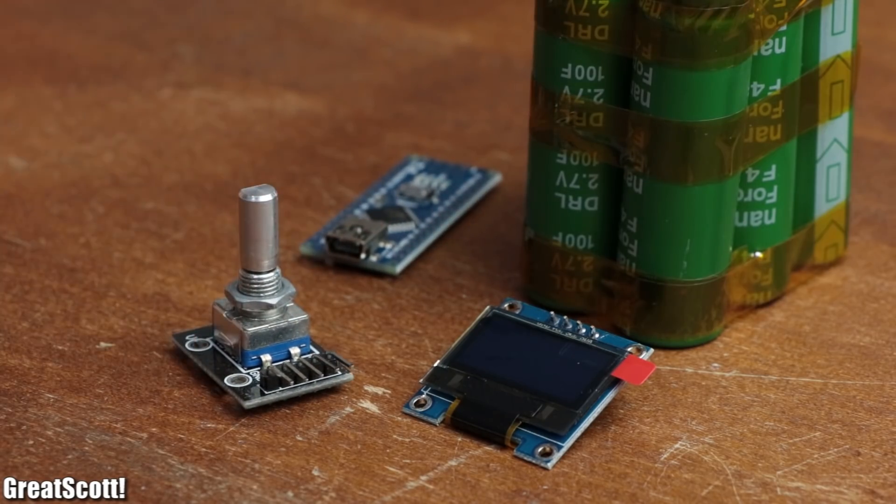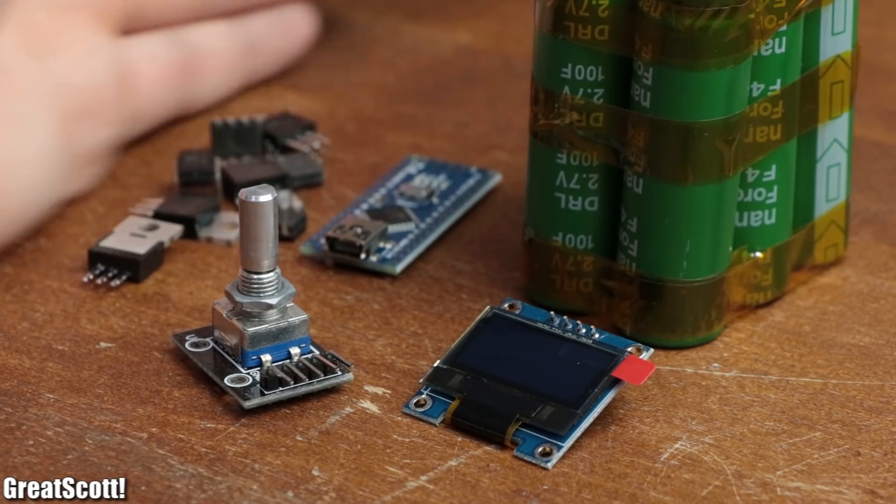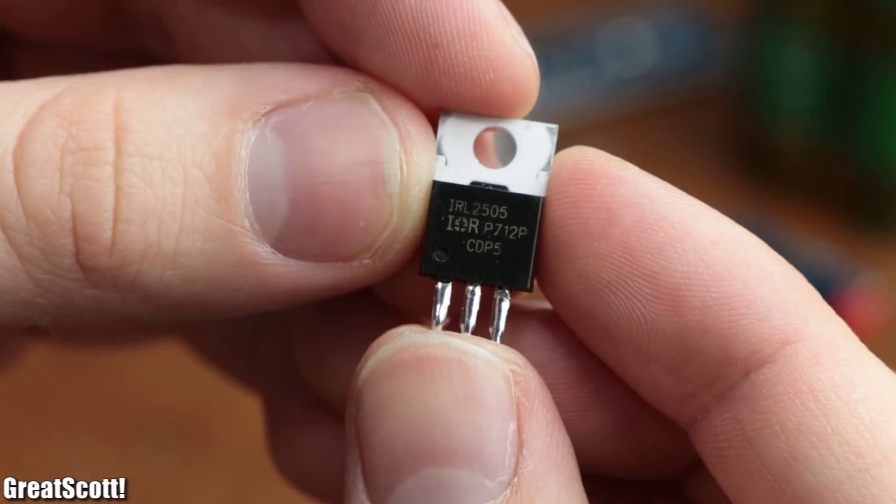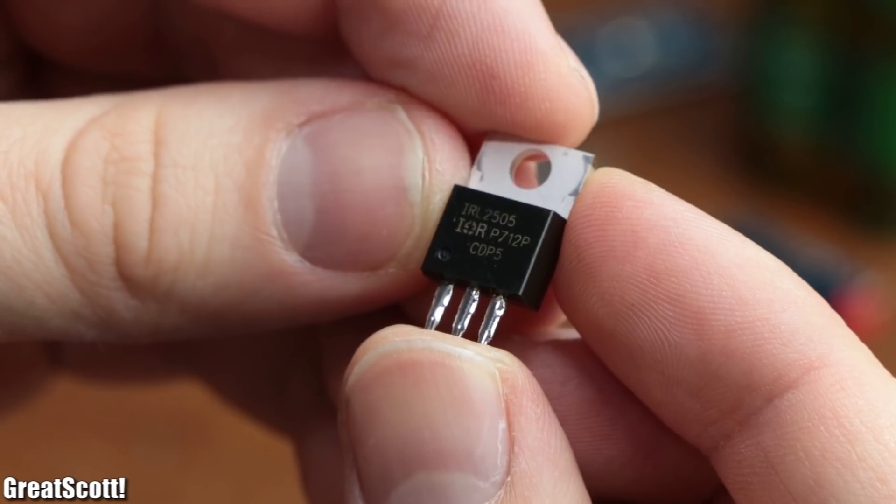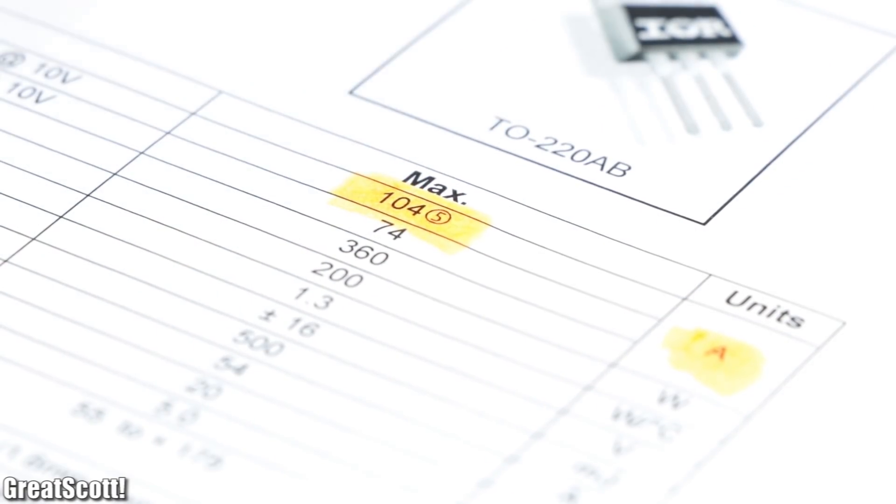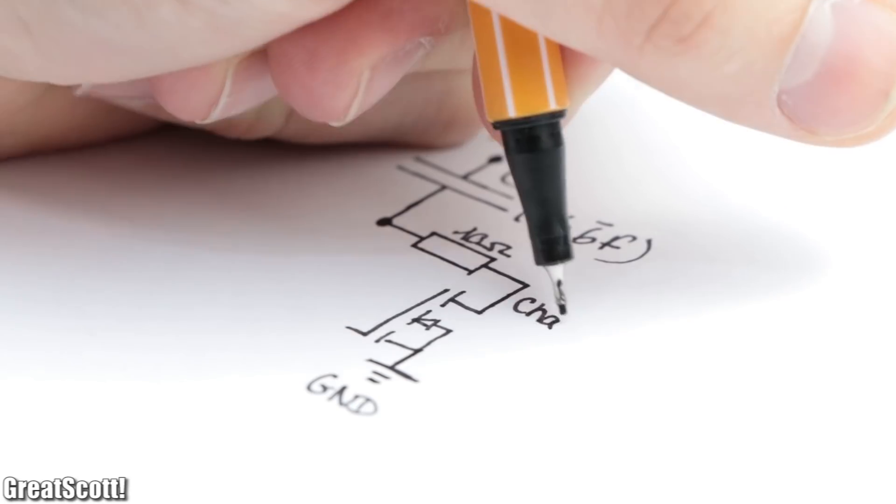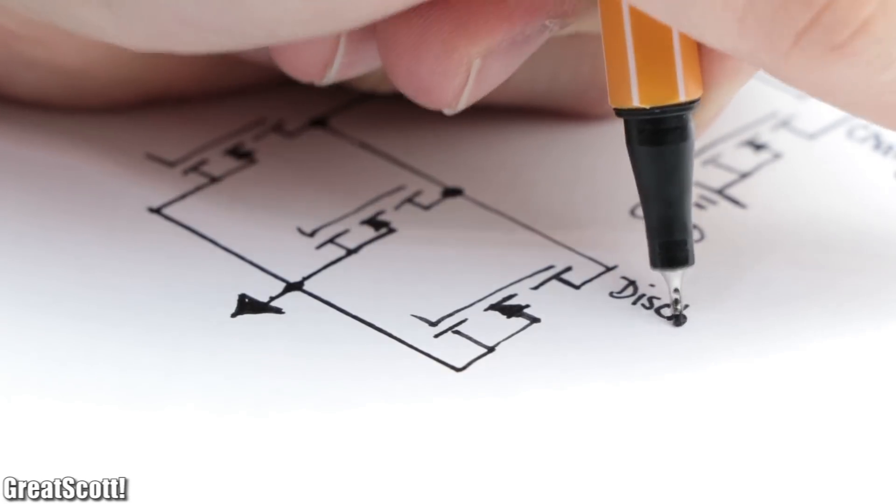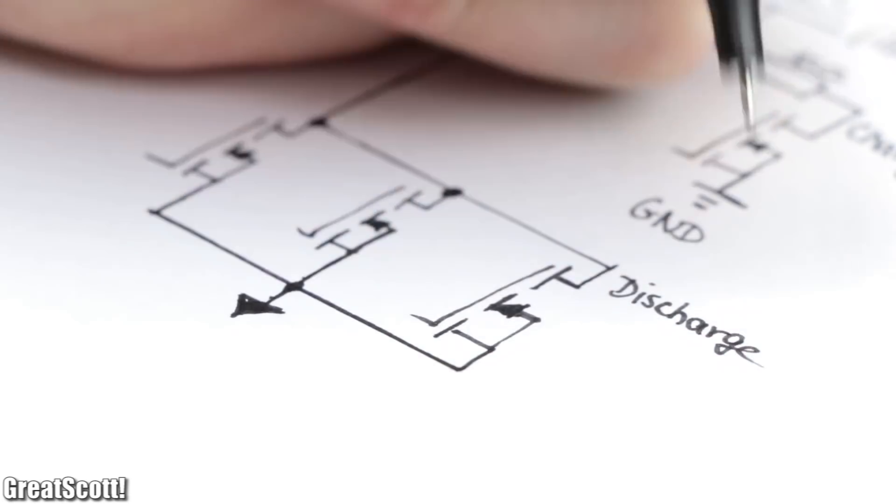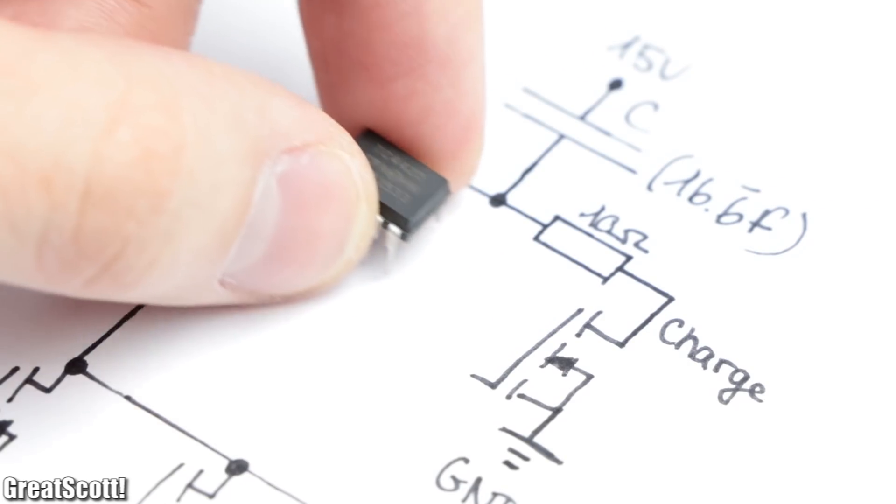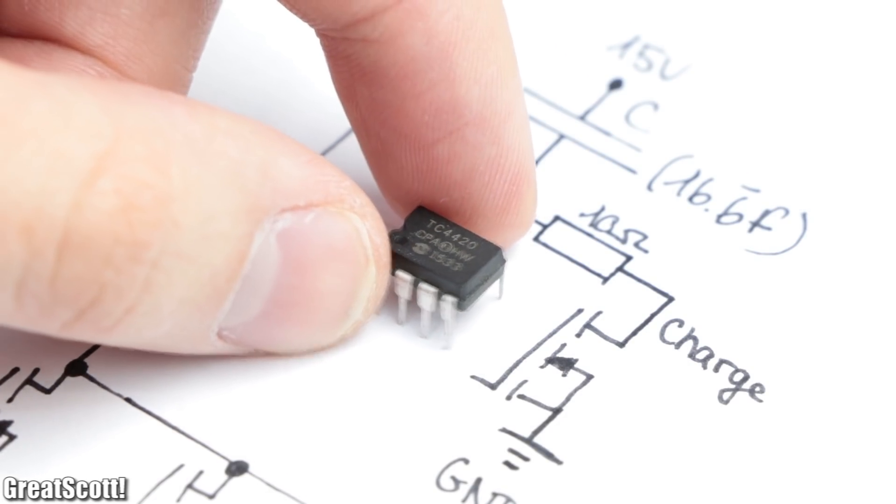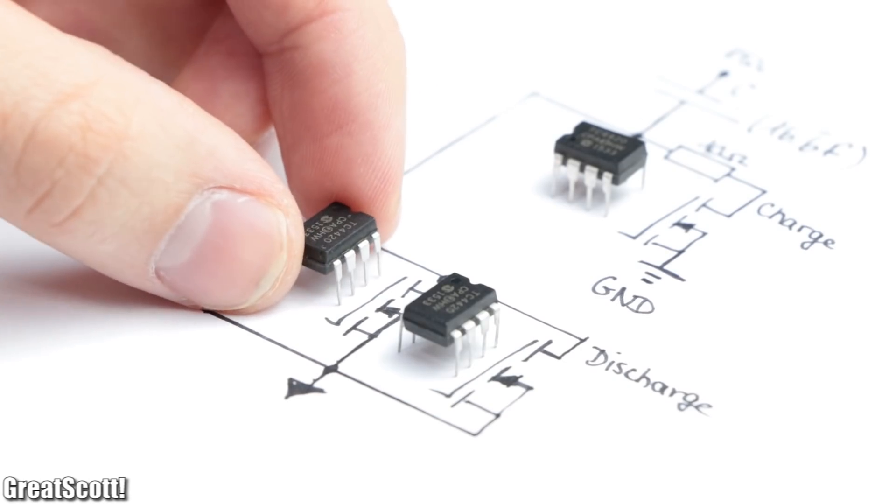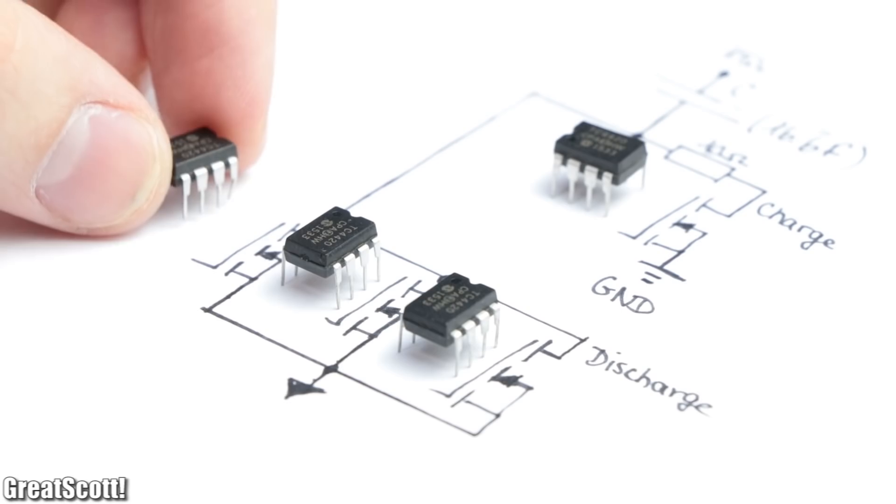That means it was time to create the control circuitry around the capacitor bank. As electrical switches I went with IRL2505 N-channel MOSFETs, which can handle up to 104 amps. Thus I used one for the charging process of the capacitors and 3 in parallel to discharge the capacitors during welding. Additionally I utilized 4 TC4420 MOSFET driver ICs, which already ends the power electronics part for this project.